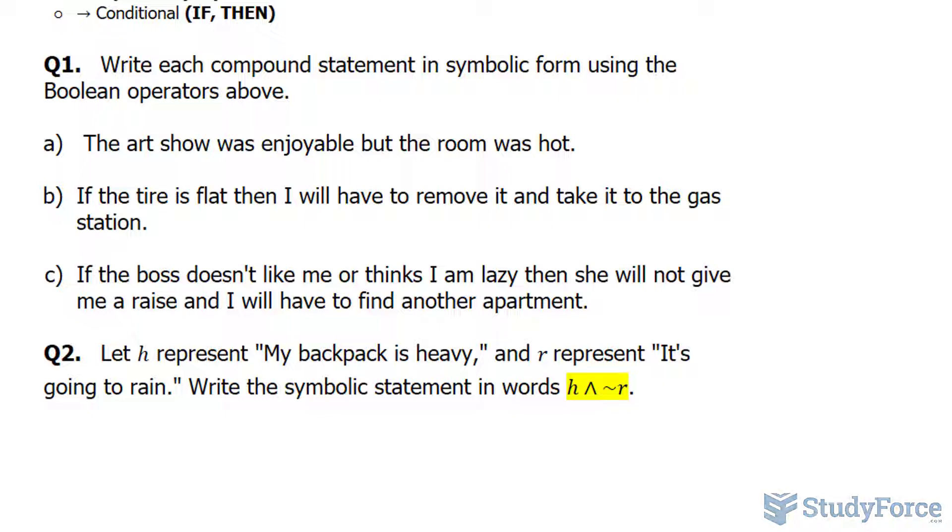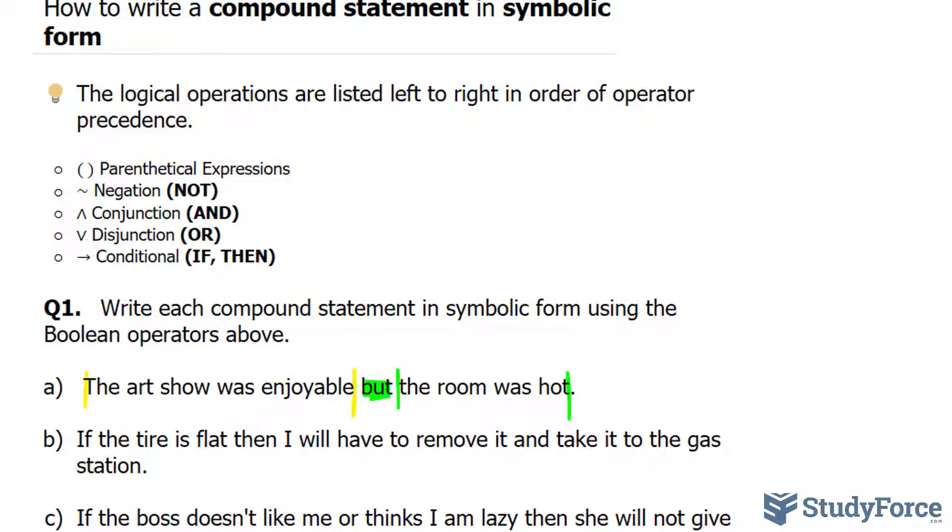So this is a compound statement consisting of two parts: the art show was enjoyable, and the room was hot. They're connected with the conjugation 'but'. Now I know that this word is not listed in this list, but it's the same thing as 'and'.